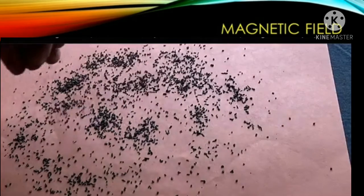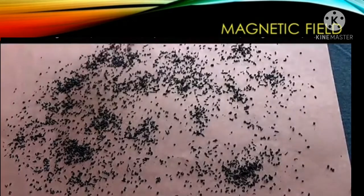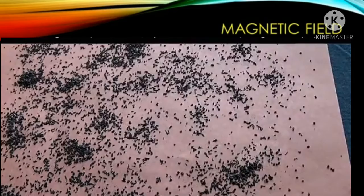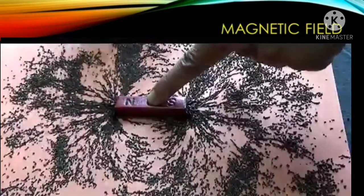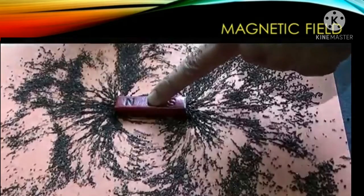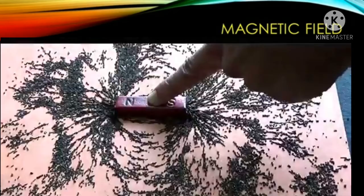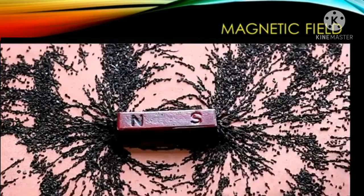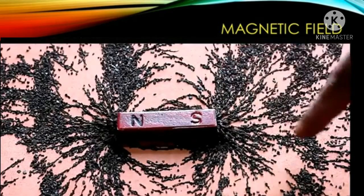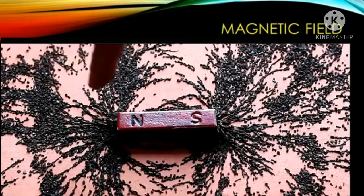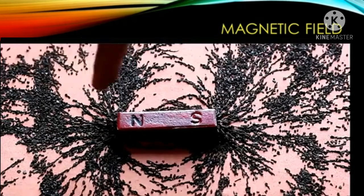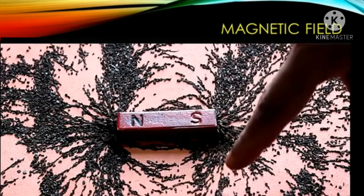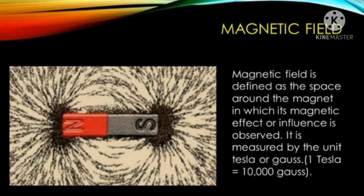Spread some iron filings which are collected from the sand uniformly on a sheet of white paper placed on a table. Place a bar magnet below the white sheet. Gently tap the table. You can see the pattern in the form of curved lines around the magnet. The iron filings are arranged in the form of curved patterns around the magnet. The space around the bar magnet where this arrangement exists represents the field of influence of the bar magnet. It is called the magnetic field.